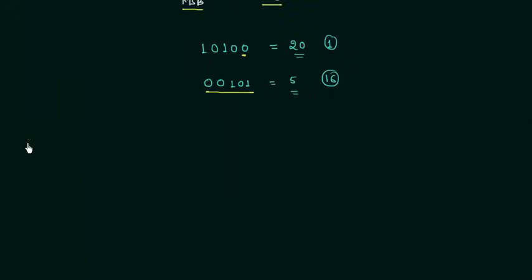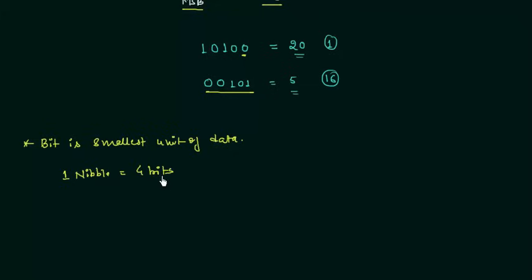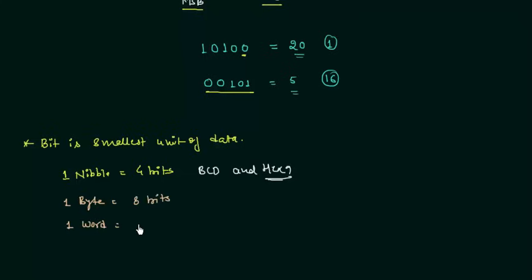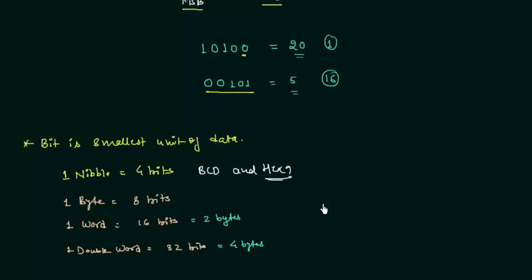A bit is the smallest unit of data. 1 nibble is equal to 4 bits, and we use nibbles to represent BCD and hexadecimal numbers because 4 bits are required for hexadecimal representation. 1 byte equals 8 bits, and 1 word equals 16 bits. 1 double word equals 32 bits — or equivalently, 1 word equals 2 bytes and 1 double word equals 4 bytes. This is all for this presentation.